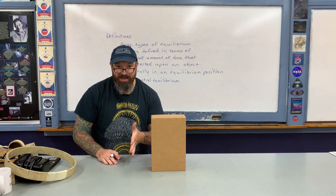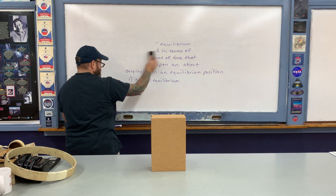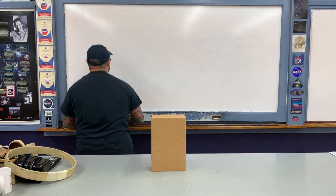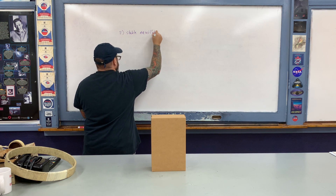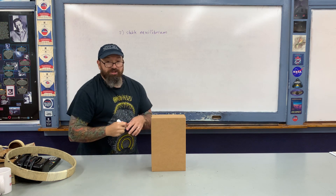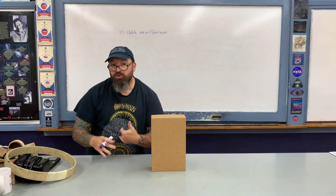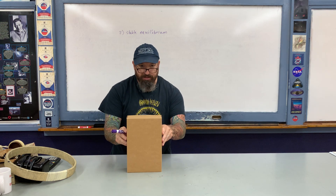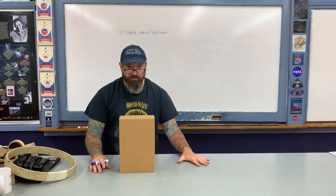Then we have what is referred to as stable and unstable equilibrium. An object is in stable equilibrium where if you exert a small amount of force on it, it returns or restores to its original position. I'll use the box here to illustrate. Take the box and tilt it a little bit, then let go of it, and it returns to its equilibrium position as it was a moment ago. That's referred to as stable equilibrium.